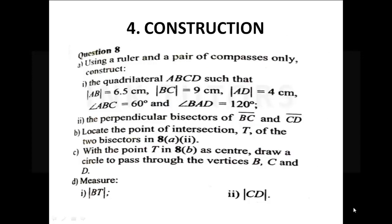Another question you cannot do without is construction. In the past five to ten years, construction has been repeating itself — it's one of the easiest questions and I consider it a bonus question. Once you understand what they're telling you to construct, you know how to bisect angles and construct 30°, 60°, 90°, 45°, and 135° angles. If you can do construction in less than ten minutes, you've secured 12 marks.